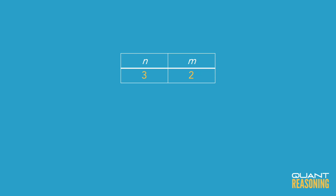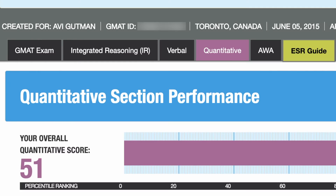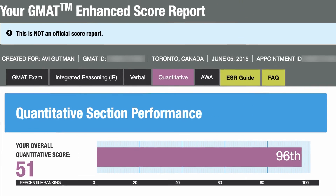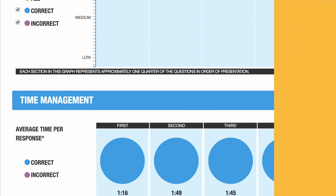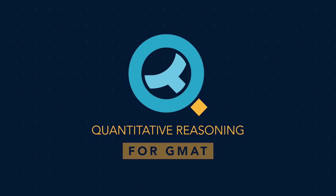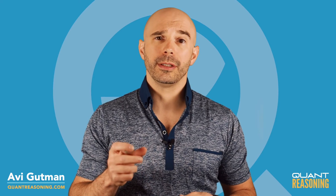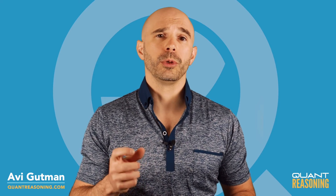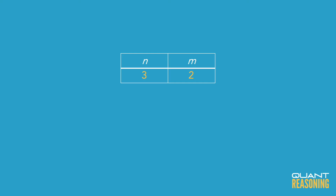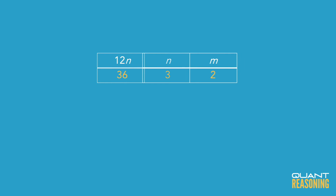The question is asking about 12n to m. We already have n to m as 3 to 2, so we can add a column for 12n. If n is 3 ratio units, then 12n is 36 ratio units. So 12n to m is 36 to 2, which reduces to 18. Therefore the correct answer is A.